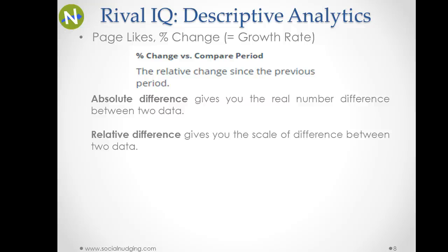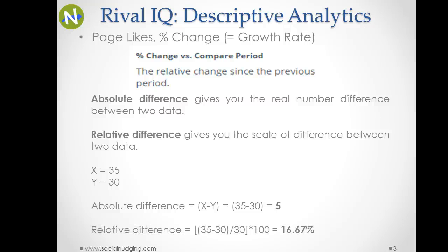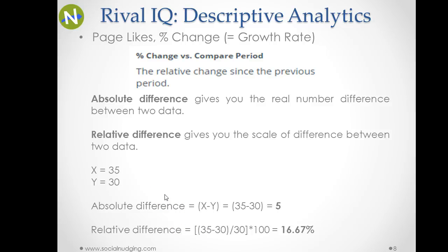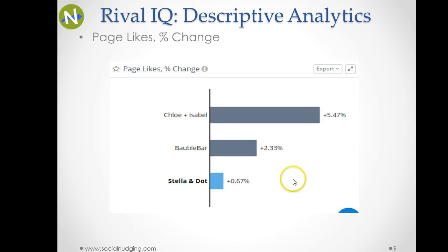Relative difference gives you the scale of difference between two data points, and most of the time it is expressed as a percentage. For example, if x = 35 and y = 30, then the absolute difference is 5, but the relative difference is 16.67%, calculated using the standard relative change equation. Page likes percentage change or growth rate shows you the relative difference between the previous period and the present period.